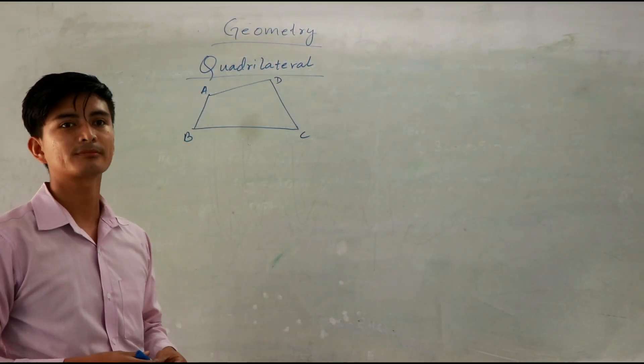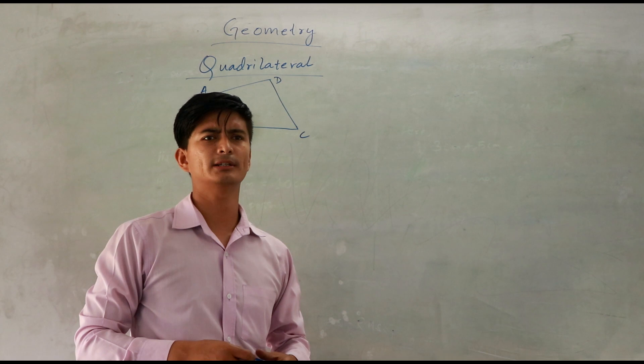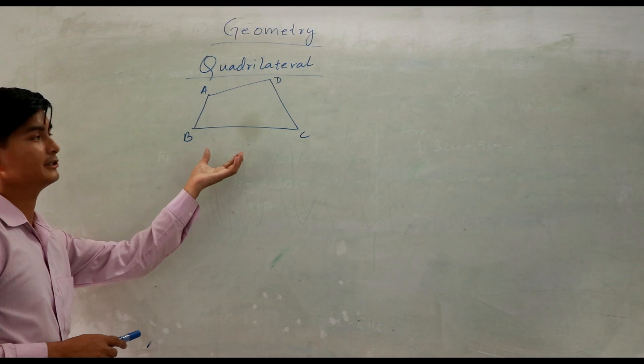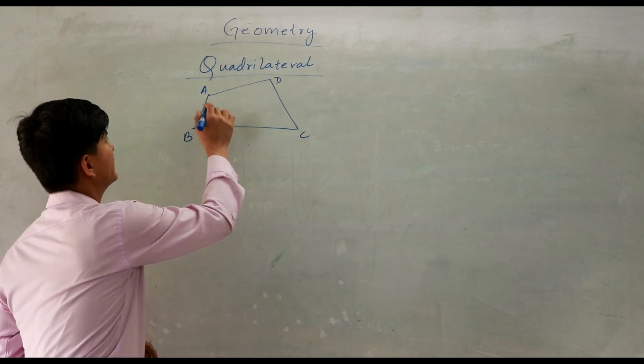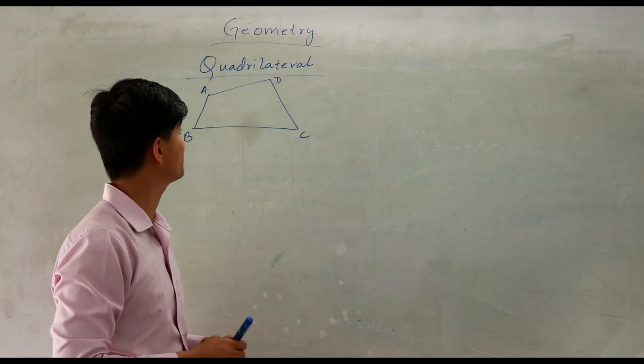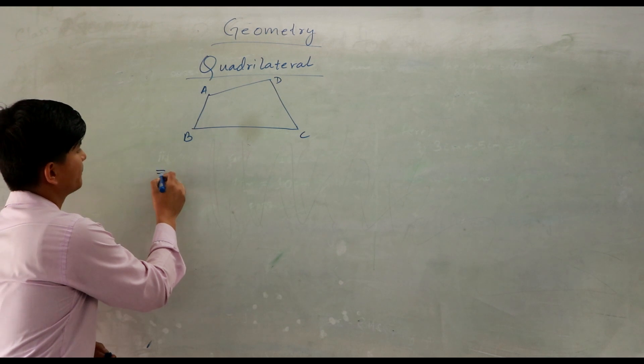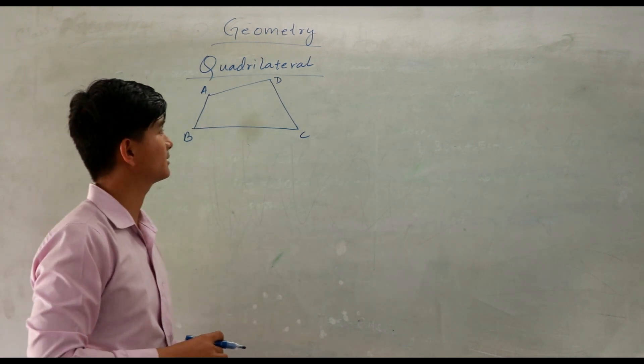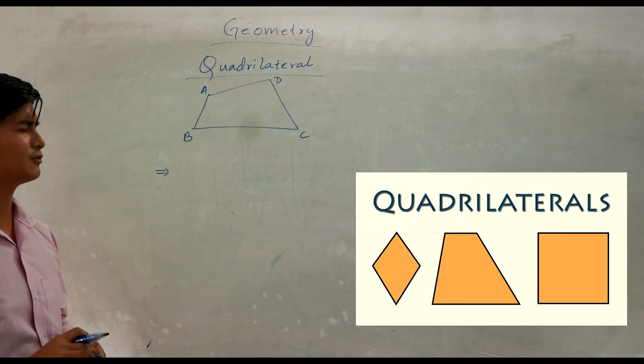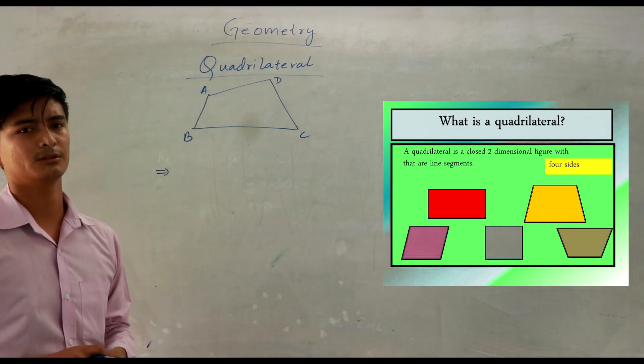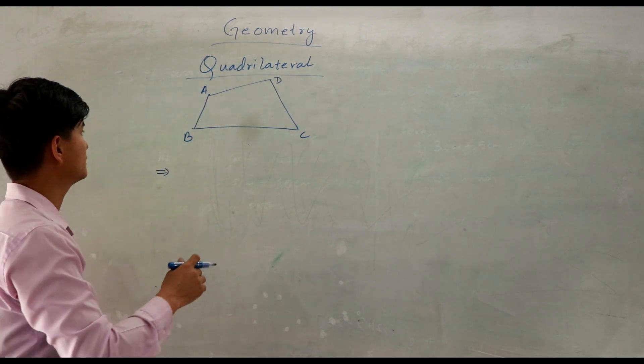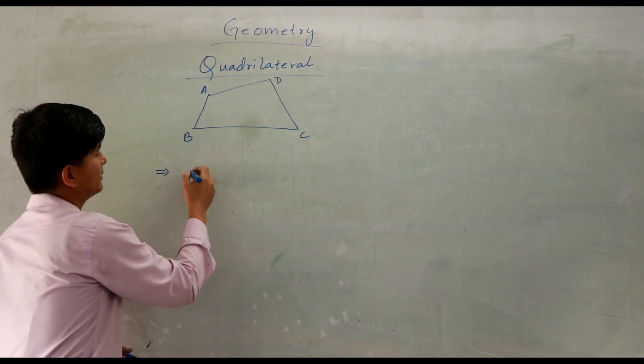Okay, here the next topic is quadrilateral. We learn about quadrilateral, so I've already drawn the figure of a quadrilateral here. Now, a quadrilateral is a closed figure, a four-sided figure. In triangle we use closed figure of three sides, but it's a four-sided closed figure.